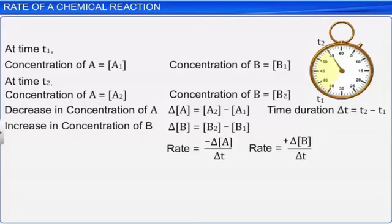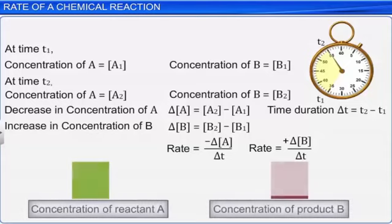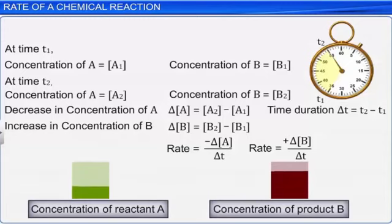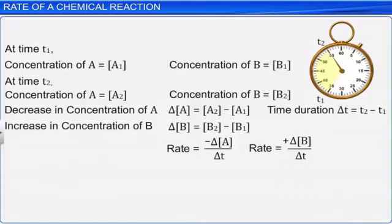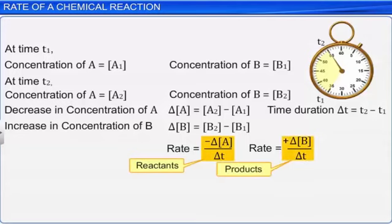The rate of reaction is not constant — it changes with time. The rate of disappearance of reactants gradually decreases with time as the reactants are consumed, and the rate of appearance of products increases with time as the products are formed.